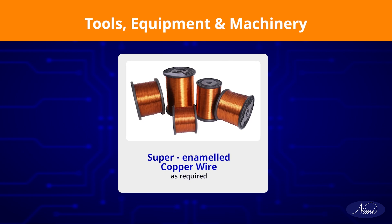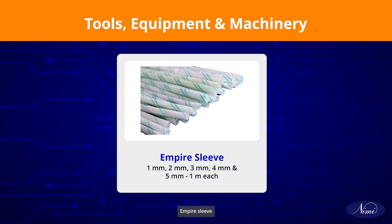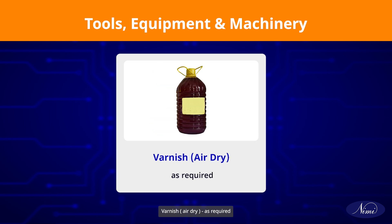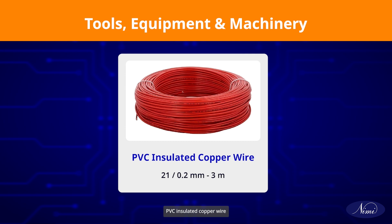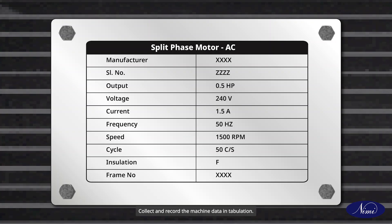Micanite or triplex paper, empire sleeve, cotton tape, bamboo wedge as required, varnish, hard dry as required, PVC insulated copper wire. Rewind a single phase split phase motor with concentric coil winding. Collect and record the machine data in tabulation.